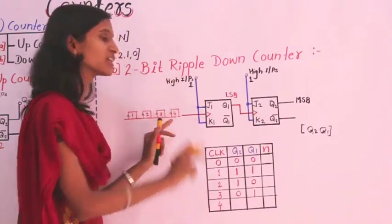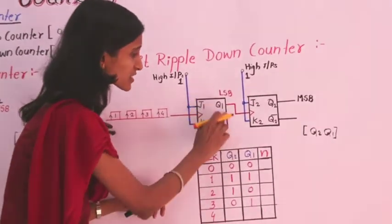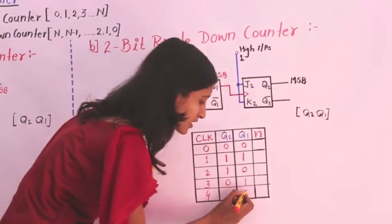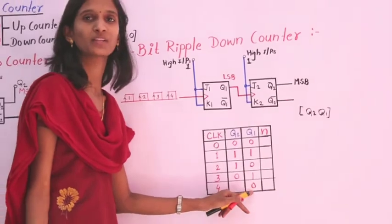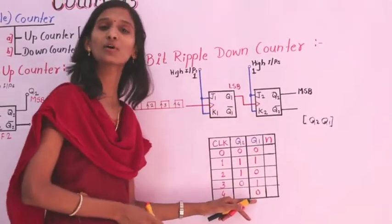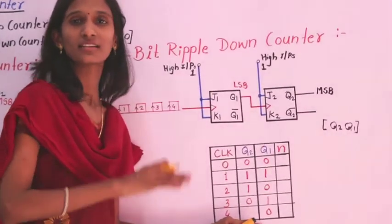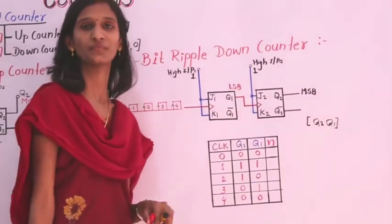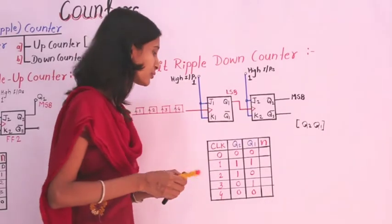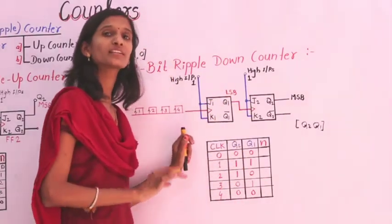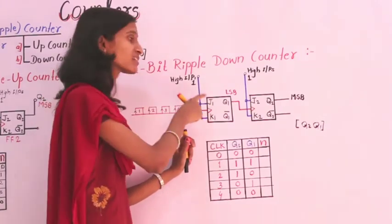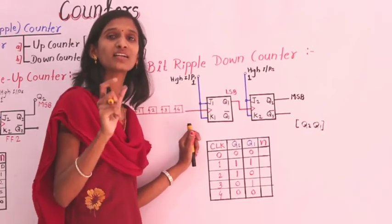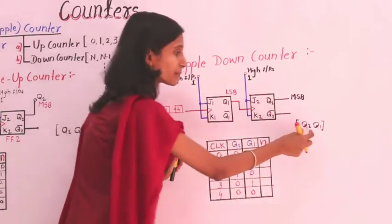For the fourth clock cycle, Q1 was previously 1, so applying the clock pulse makes it toggle to 0. This 0 is applied to the second flip-flop; since the clock is absent (0 condition), the second flip-flop does not trigger and remains in its previous condition of 0. So both Q2 and Q1 become 0. The output is represented in 2 bits — Q2 as MSB and Q1 as LSB.